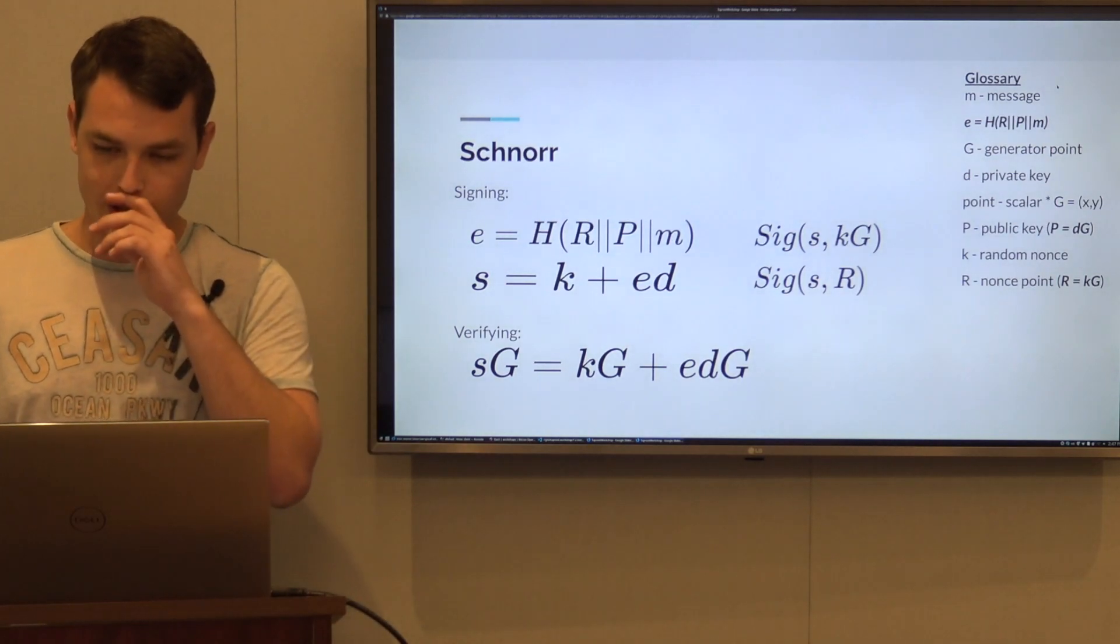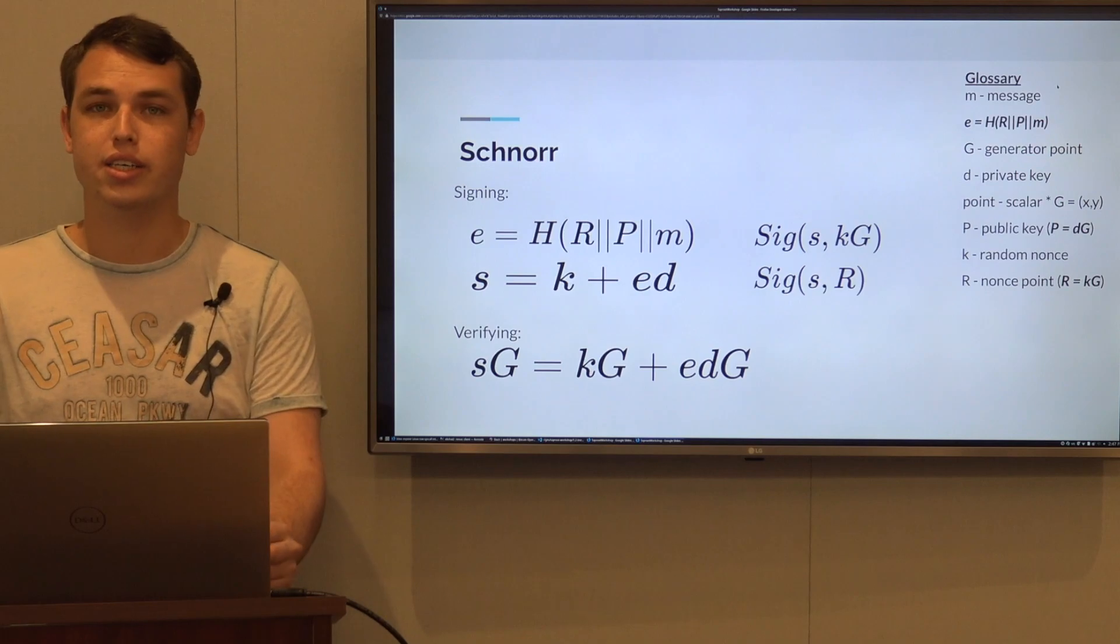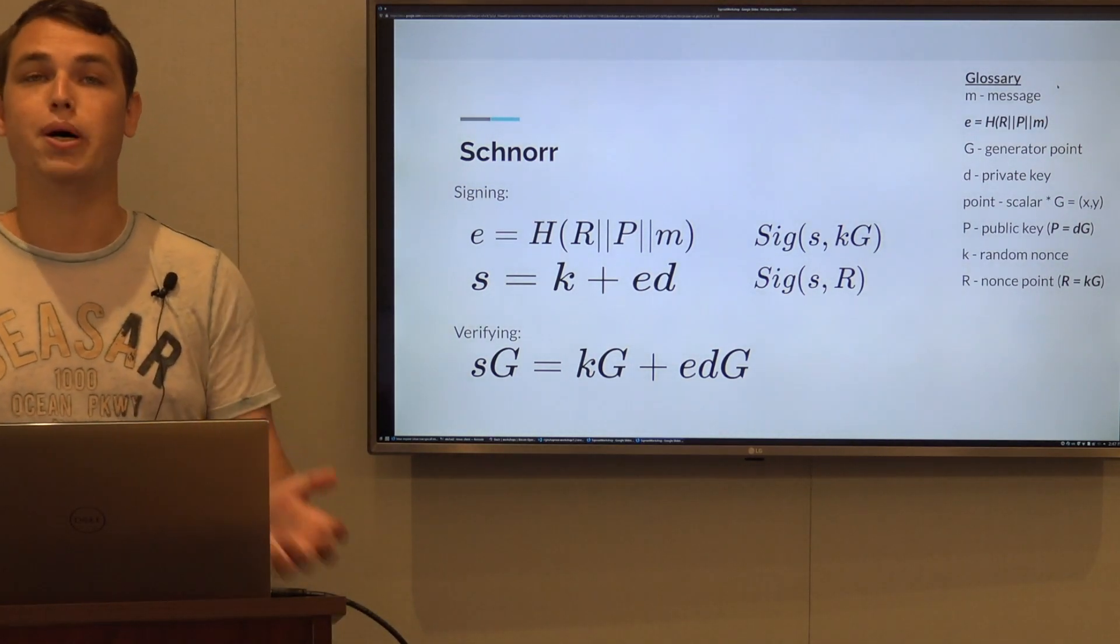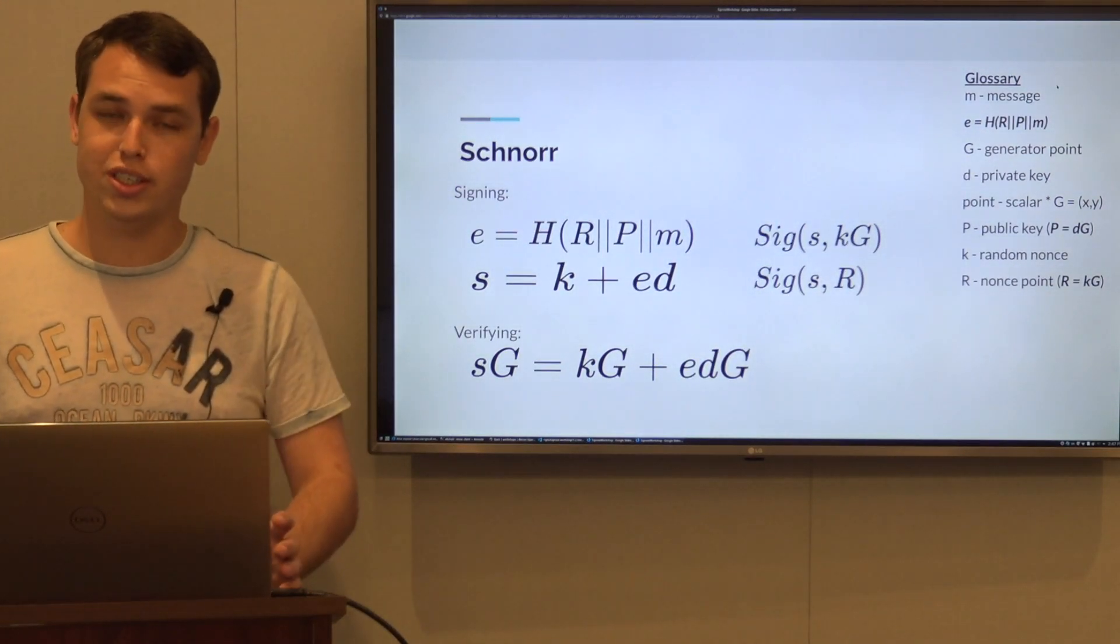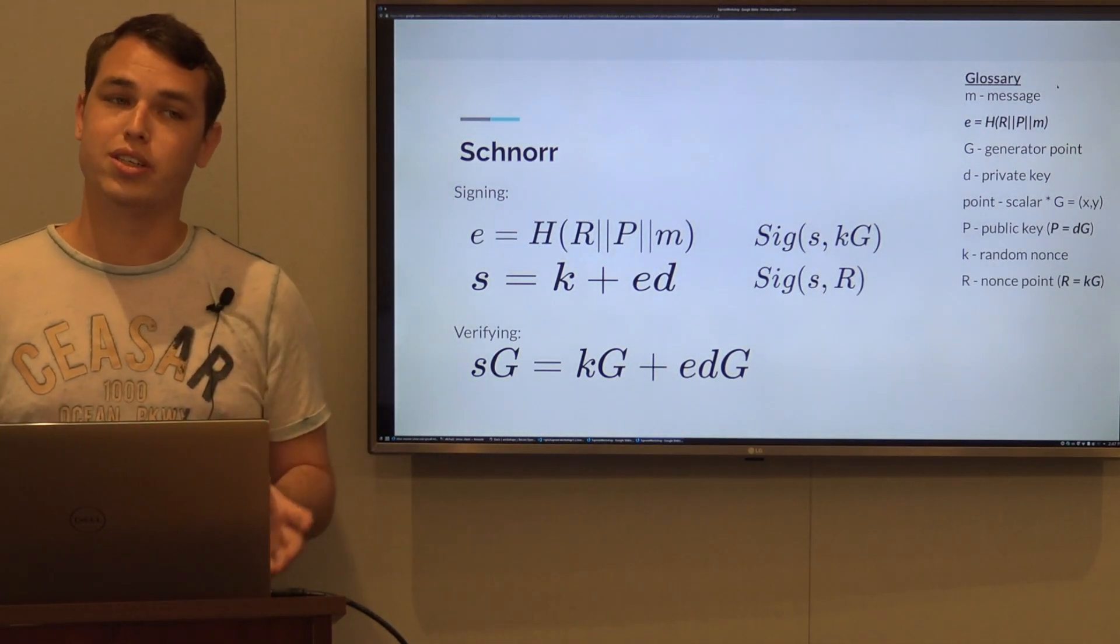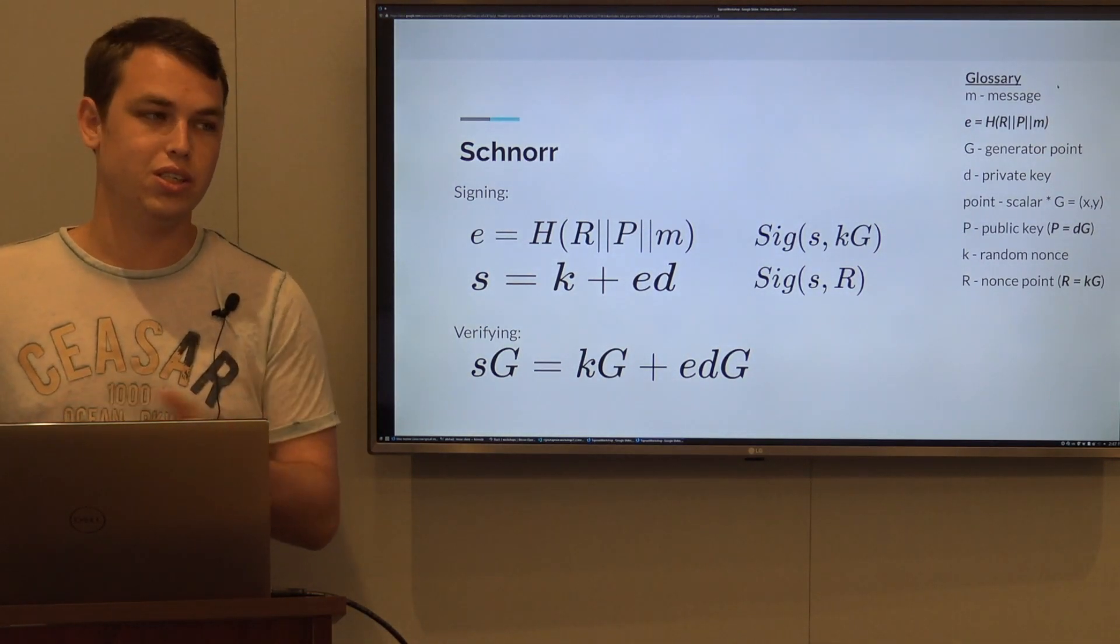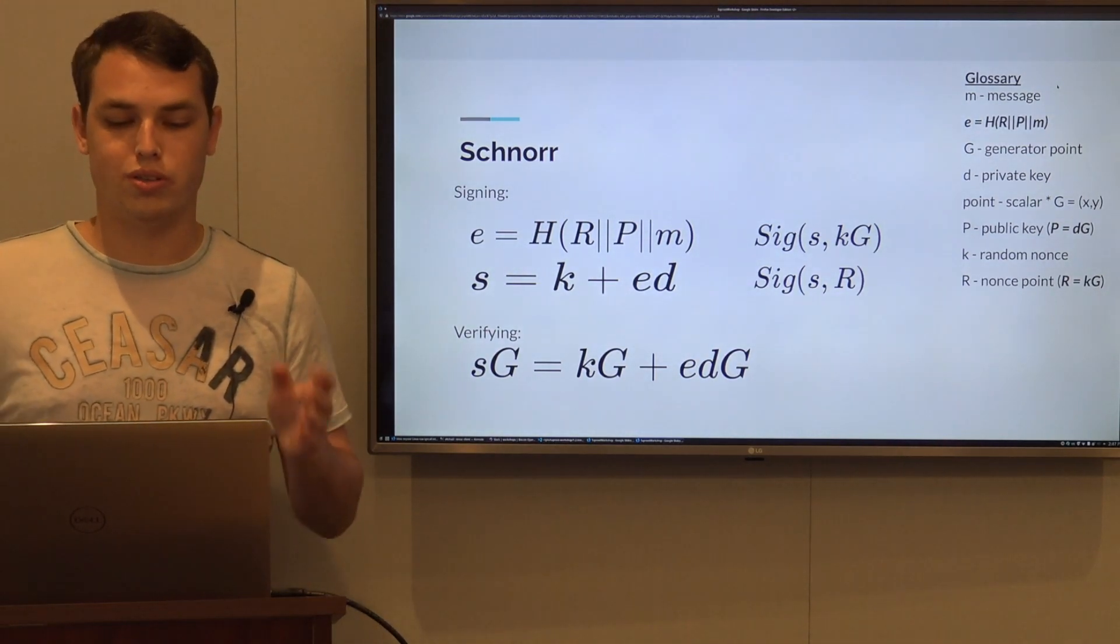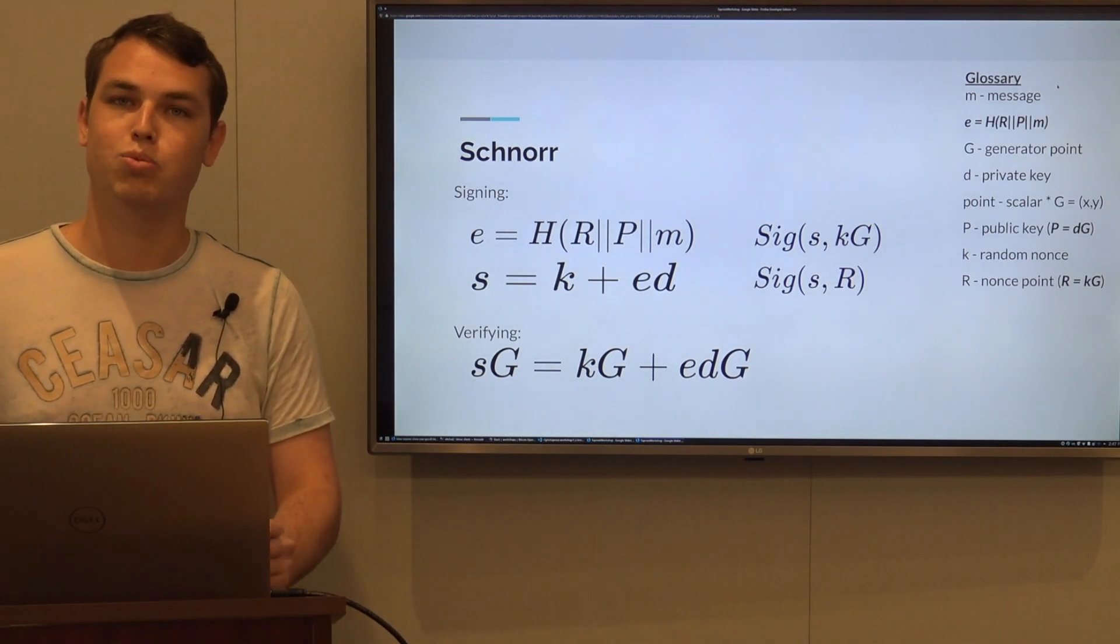K is some random nonce and R is that nonce multiplied by the generator - this is the public point for that nonce. So all Schnorr is, is you take the random nonce, take that E, multiply by your private key, add them up, and this is the signature.